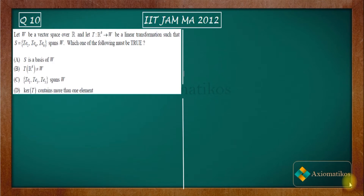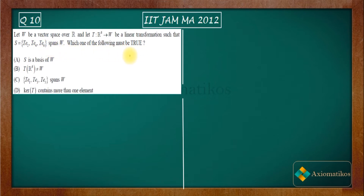Hello dear students, welcome to Exeomatic course. This video is part of the solution series for IIT JAM 2012. We are here with Problem 10. This problem is from the topic linear algebra. It says: let W be a vector space over R, and T: R⁶ → W be a linear transformation such that the set S = {Te₂, Te₄, Te₆} spans W. Which one of the following must be true?